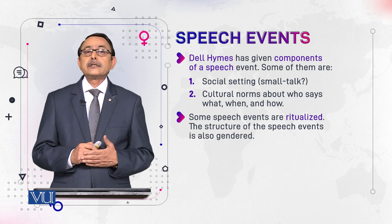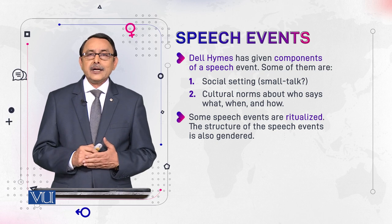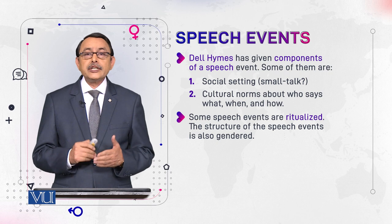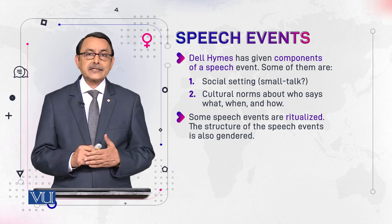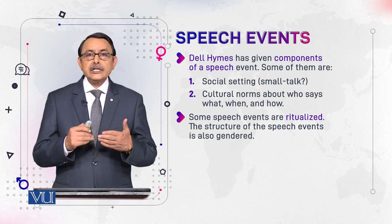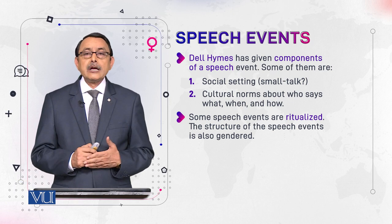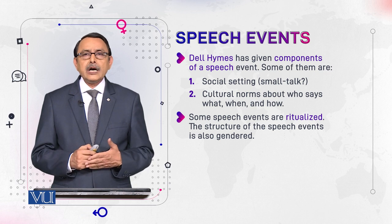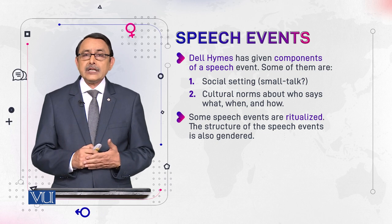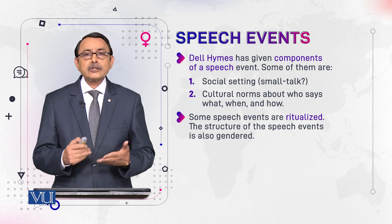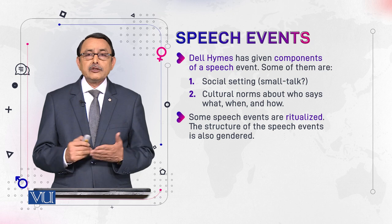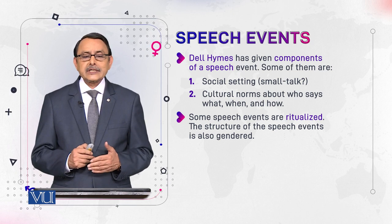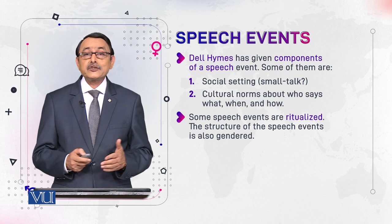Some speech events are ritualized — here the role of culture is emphasized. For example, a cultural setting tells us how the speech event of greeting will take place. In our culture, when we greet each other, we say Assalamu Alaikum, and the other person says Wa Alaikumussalam. Similarly, in other cultures: 'How are you?' and 'I am fine,' or 'Good morning' and the second person also says 'morning.' In Hindu culture, they join their palms, and in Japanese culture, they bow to each other. So it varies from culture to culture, and these things are ritualized.